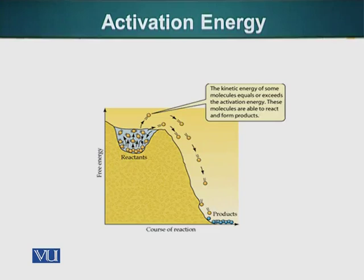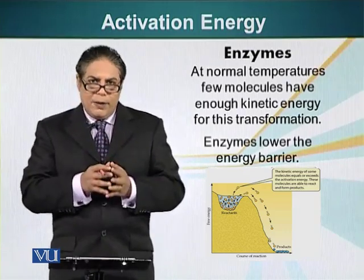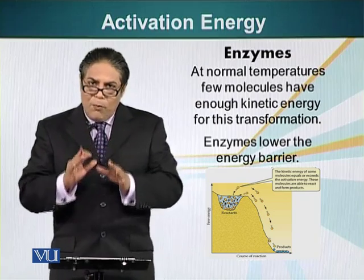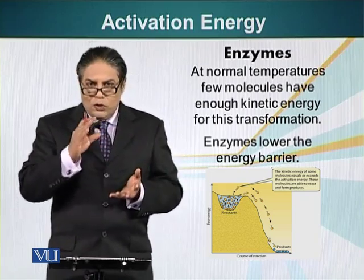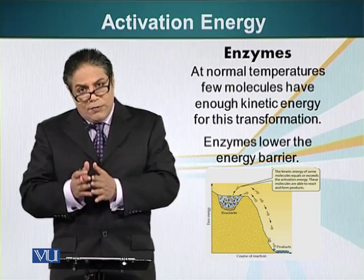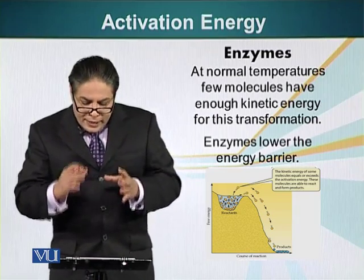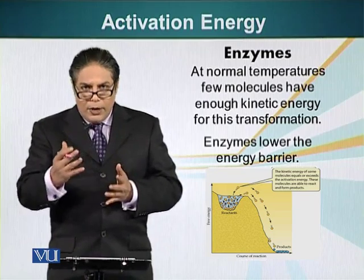Enzymes can help reactants attain the transition state with a lower energy requirement. As we saw with glucose 1-phosphate converting into glucose 6-phosphate, 5% of molecules remained at a higher energy level at 25 degrees Celsius because some molecules had enough kinetic energy to attain a higher energy state — glucose 1-phosphate — converting their kinetic energy into potential energy in the form of a high-energy bond. Enzymes can use three different strategies to lower the activation energy, which we will look at in the next module.